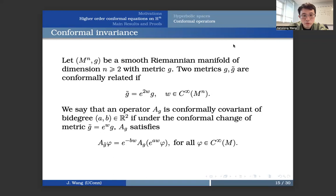And with an operator A, G is conformally covariant with bi-degree A and B, if under the conformal change of metric, A G satisfies the following equation: A G tilde phi equals e to the minus BW A G plugging e to the power A W phi for any phi being a smooth function.